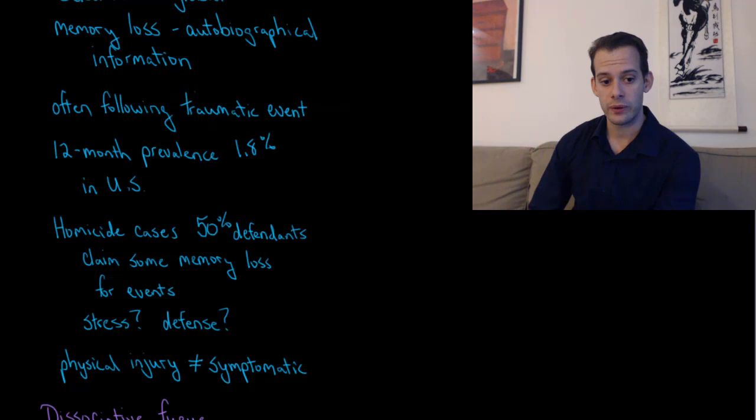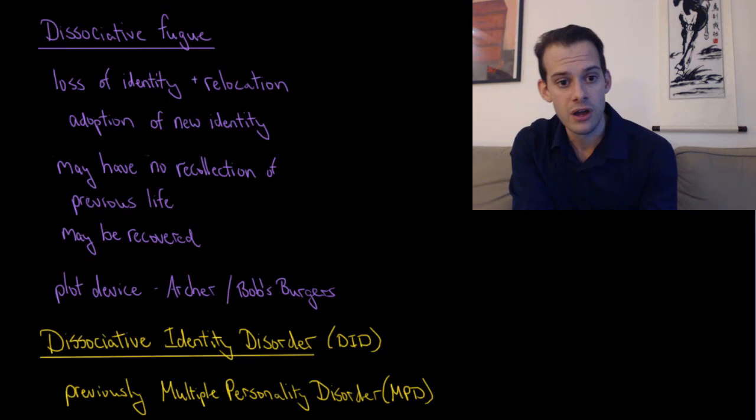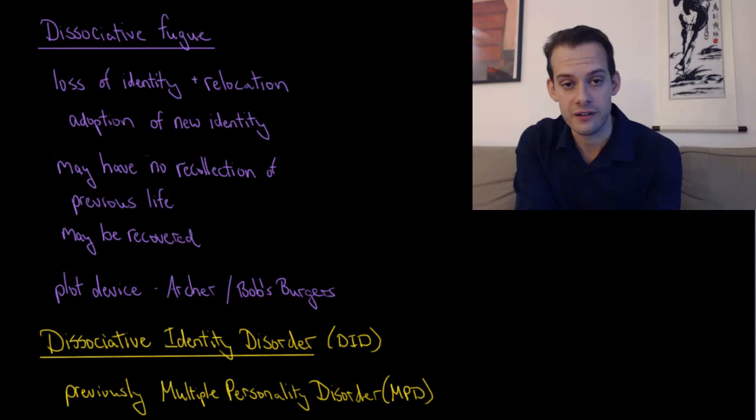So now we'll look at the next disorder which is dissociative fugue. This also has some dissociative amnesia where the person loses their identity. They can't remember who they are or lots of autobiographical information. And then they have a fugue which refers to a fleeing. So they relocate to a new location and adopt a new identity. They may not have any recollection of their prior life, although some of those events may be able to be recovered subsequently.